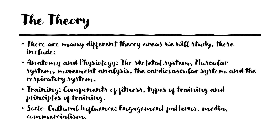We'll look at social and cultural influences — patterns of engagement, and why certain groups such as females, males, young, old, or people with disabilities do or don't participate in sport. We'll look at the media — how the media portray sport and the influence they have — and commercialism, including sponsorship. That leads into something called the golden triangle: how sport, media, and commercialism all work together.